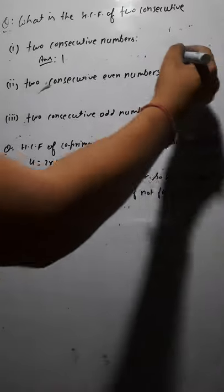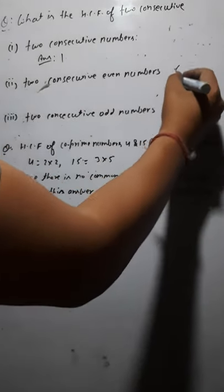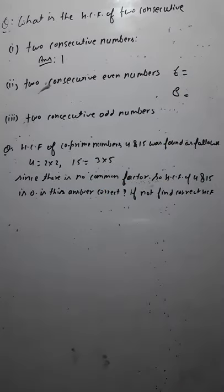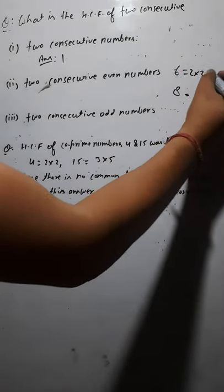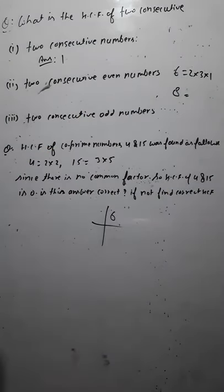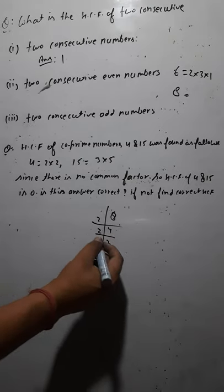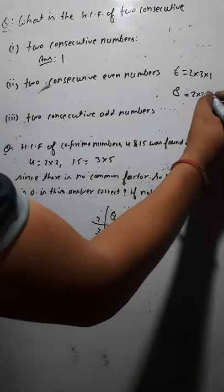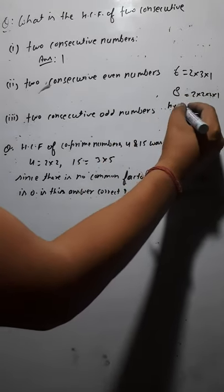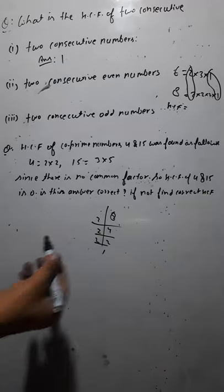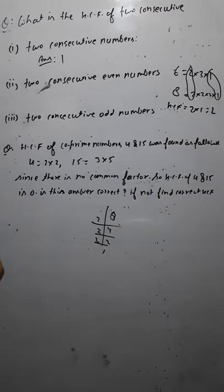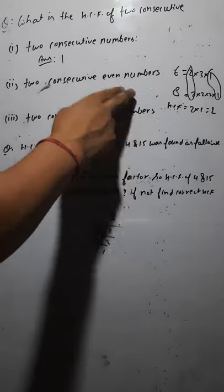Let's take one more example with other consecutive even numbers: six and eight. Prime factorization of six: two × three × one = six. Prime factorization of eight: two × two × two × one = eight. If you see the common factors, two is common and one is common. So the answer is two × one = two again. Any time you take two consecutive even numbers, every time you will find HCF = two.